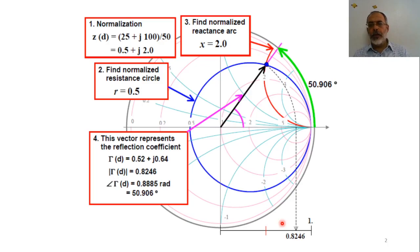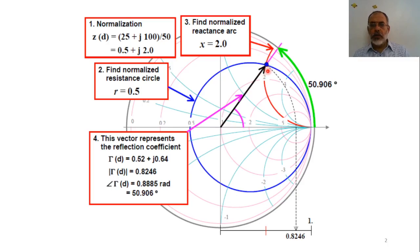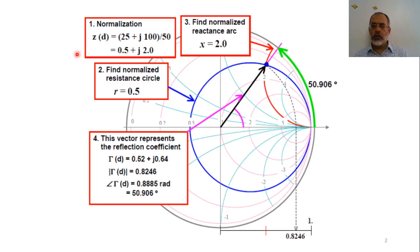From this example, the reflection coefficient for this load is 0.8246 with a phase shift of 50.9 degrees. By mapping the impedance on the Smith chart we can calculate the magnitude and phase of the reflection coefficient directly, instead of using the complex formula (Z minus Z0) over (Z plus Z0).